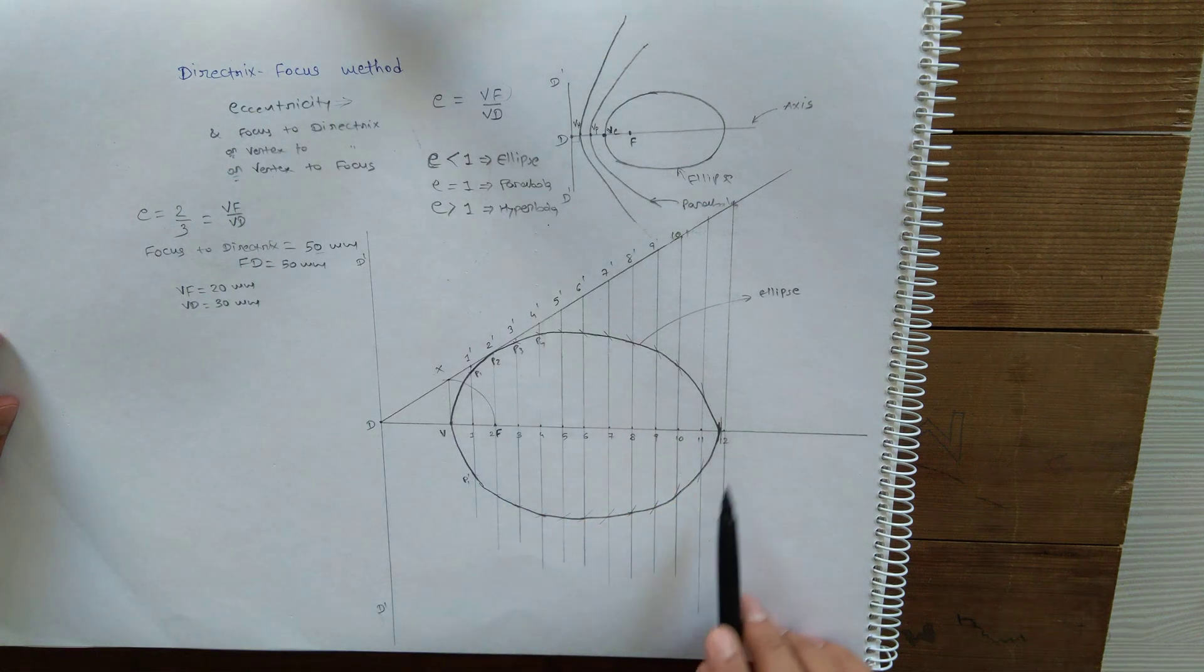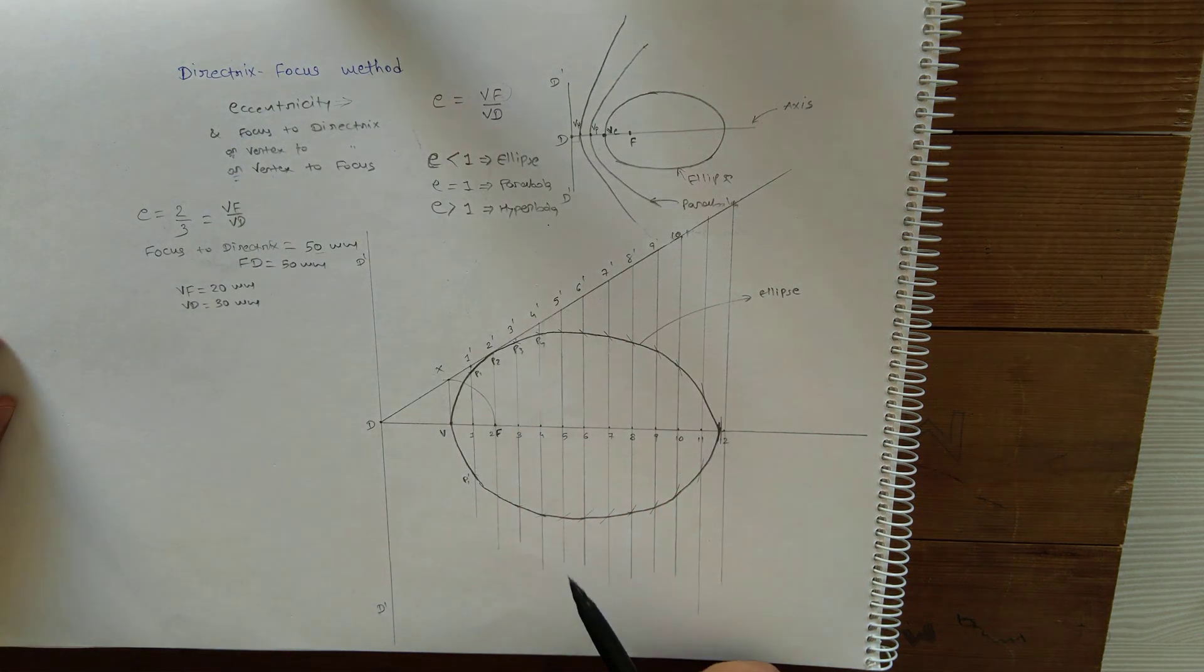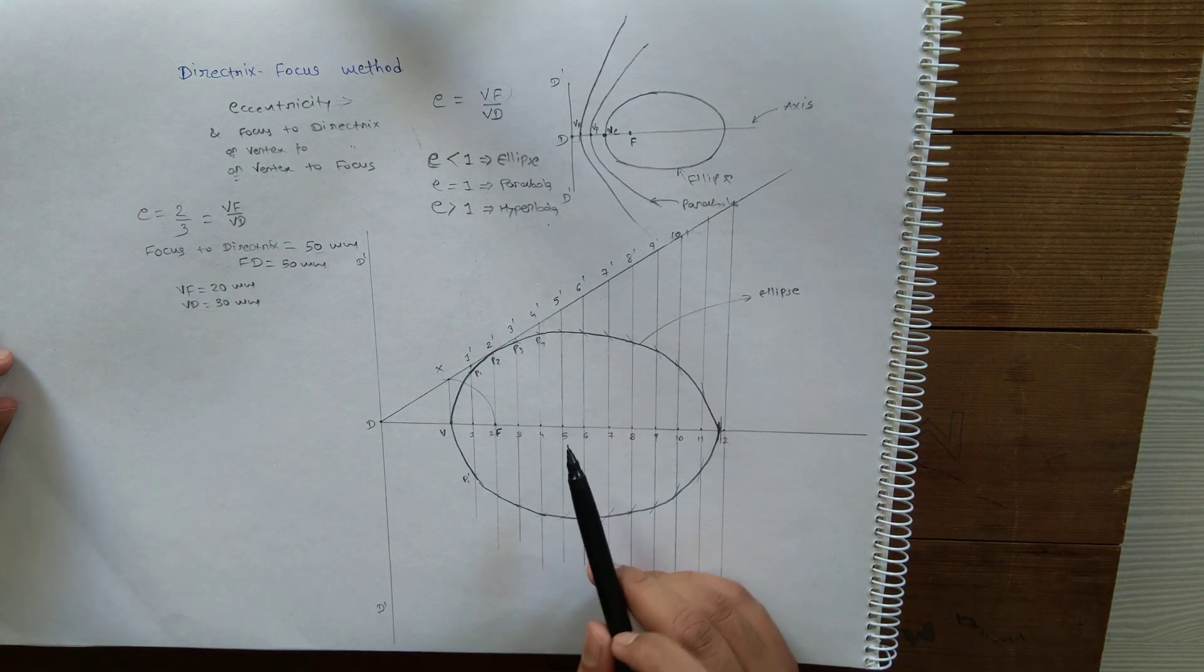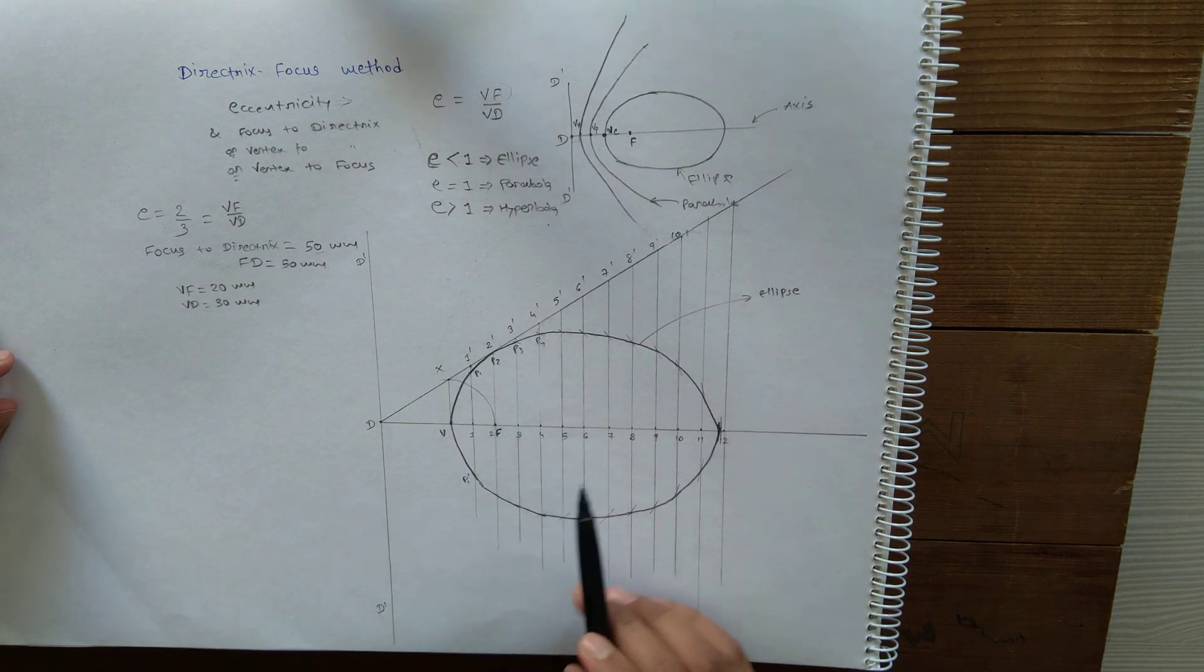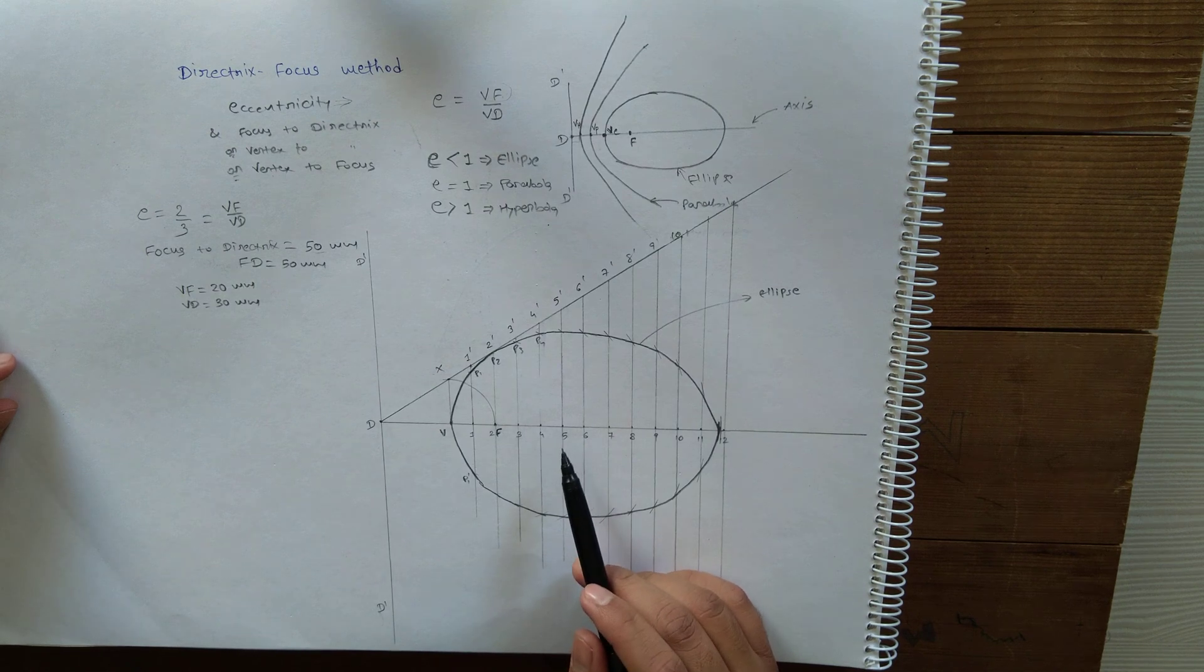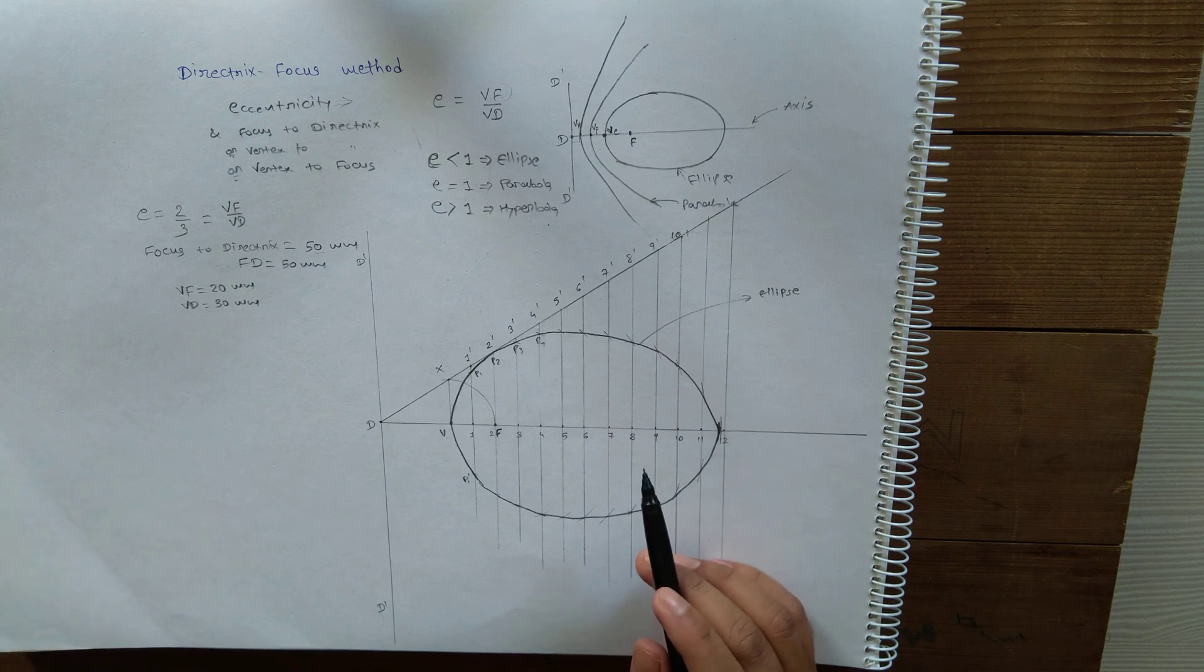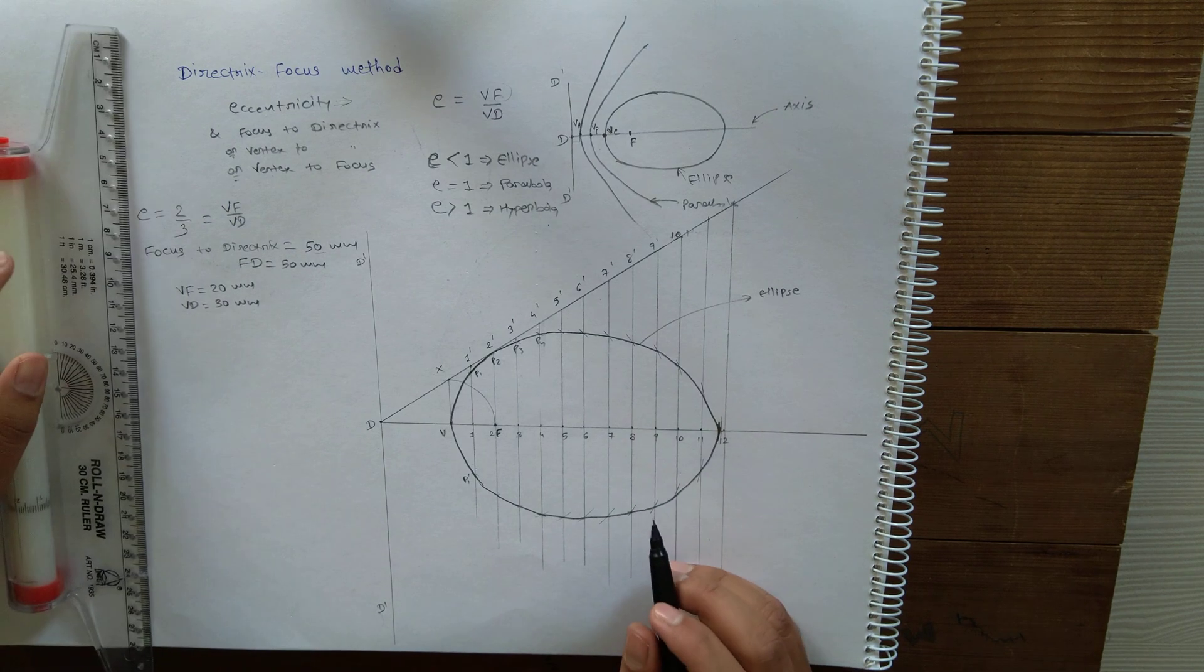To draw tangent and normal using the directrix focus method for any conic - ellipse, parabola, or hyperbola - follow this method. Earlier you might have seen my videos in which I explained how to draw tangent and normal to ellipse, parabola, and hyperbola differently, but in this particular method you should follow this approach.